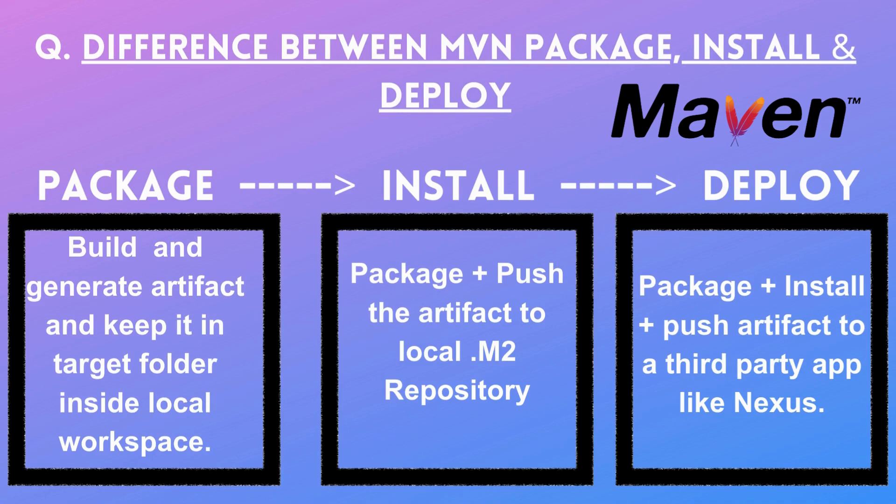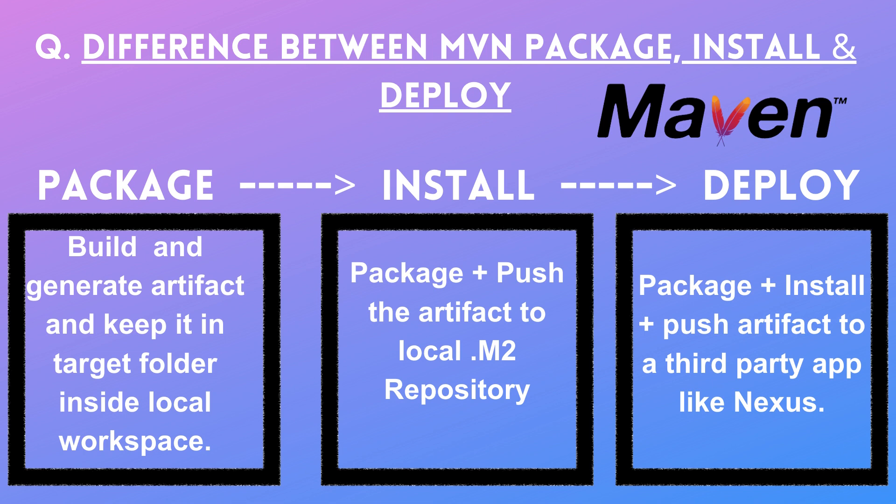Since I mentioned working with Maven and Java-based applications, interviewers asked: what is the difference between `mvn package`, `install`, and `deploy`? When you run `mvn package`, it builds the application, generates the JAR file, and keeps it in the local target folder. When you run `mvn install`, it runs package and also pushes the artifact to the local `.m2` repository. When you run `mvn deploy`, it runs package and install, then pushes the artifact to a third-party artifact management tool like Nexus or JFrog Artifactory.